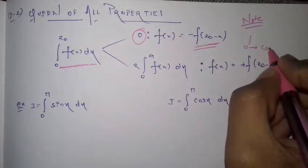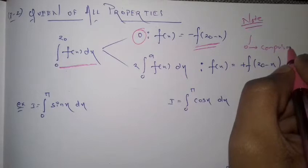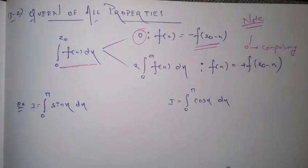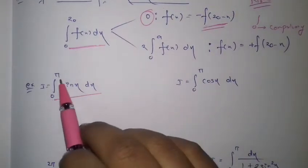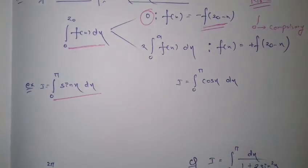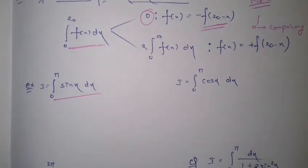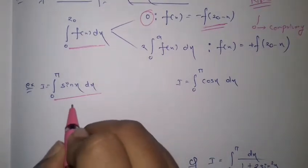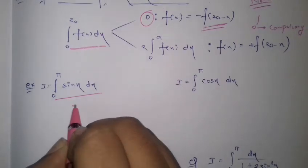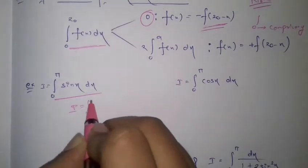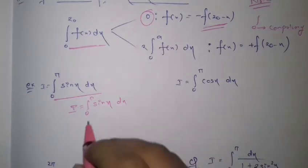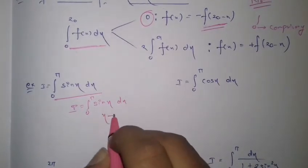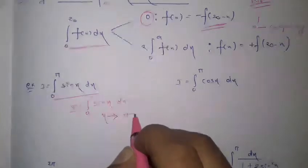The lower limit must be 0 to apply this rule. Now I'll take an example to make this clearer. Consider I = ∫₀^π sin x dx. First, check by replacing x with the sum-of-limits minus x, that is pi minus x.